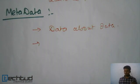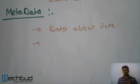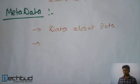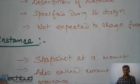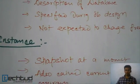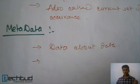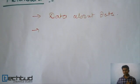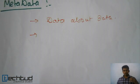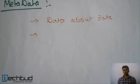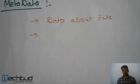All these metadata and schema things are stored in those tables. To summarize: schema is the description of the database, specified during database design. Instance is the snapshot of our database at a particular moment. Metadata is the data about your database stored by the database system. I hope you understand — if you have any doubts, ask in the doubt section. Thanks for watching.